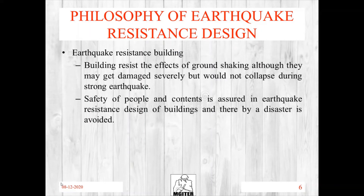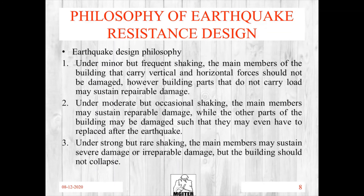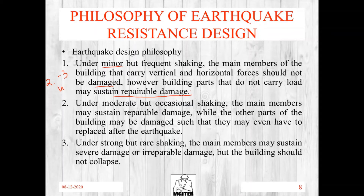The second approach is earthquake-resistance design, which has three conditions. First, for a minor earthquake — magnitude 2, 3, or 4 — building members should not be damaged, or if damaged, the damage should be repairable. The building should sustain only repairable damage during minor earthquakes. These are the philosophy of earthquake-resistance design.